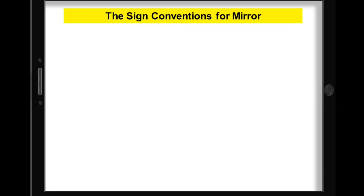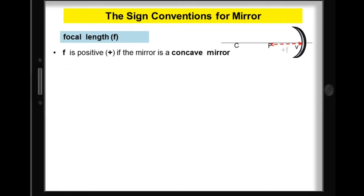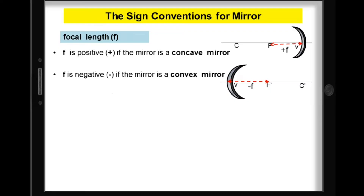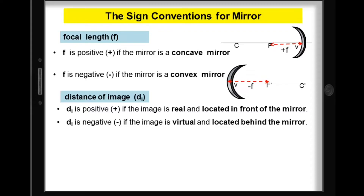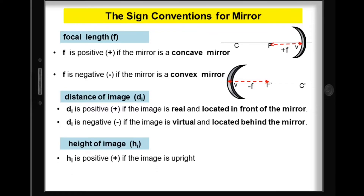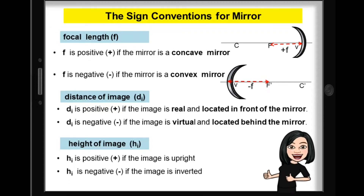Before using the mirror equation, don't forget the sign conventions for mirrors. The focal length is positive for a concave or converging mirror, and negative for a convex or diverging mirror. Distance of image is positive if the image is real and located in front of the mirror; negative if the image is virtual and located behind the mirror. Height of image is positive if upright, and negative if inverted.